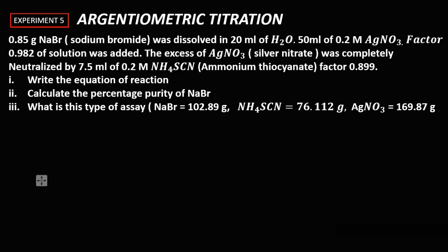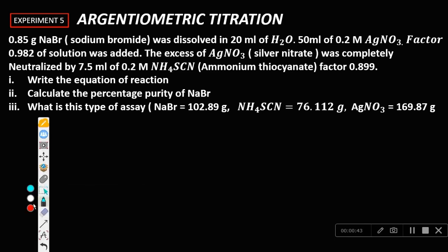We are going to solve one question on argentometric titration. The question is: 0.85 gram of sodium bromide was dissolved in 20 mL of water. 50 mL of 0.2 mol silver nitrate with a factor of 0.982 was added. The excess silver nitrate was completely neutralized by 7.5 mL of 0.2 mol ammonium thiocyanate of factor 0.899. Write the equation of reaction and calculate the percentage purity of sodium bromide.